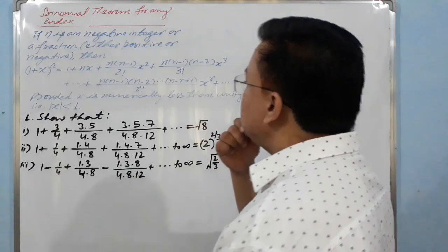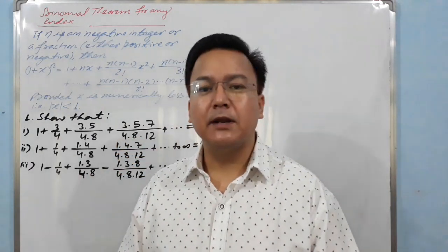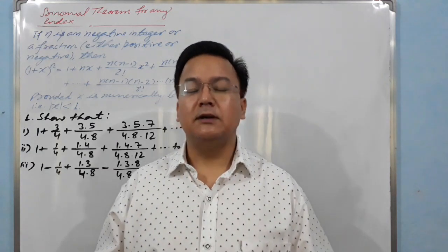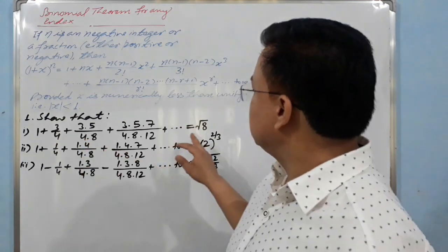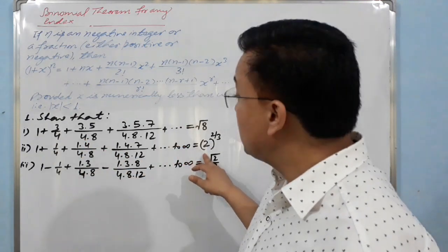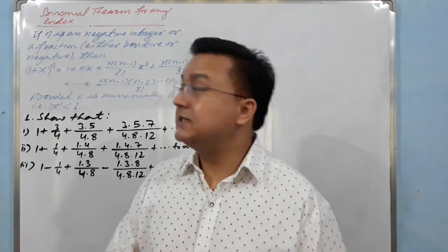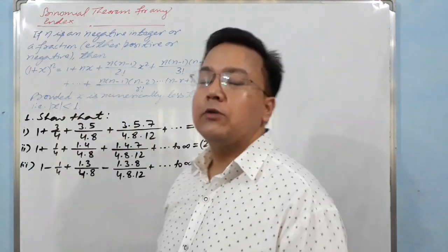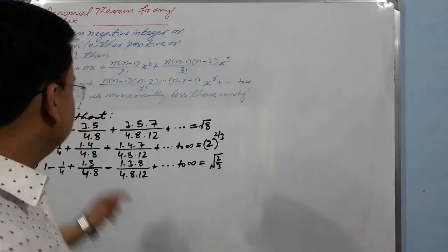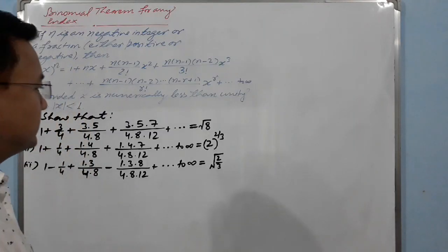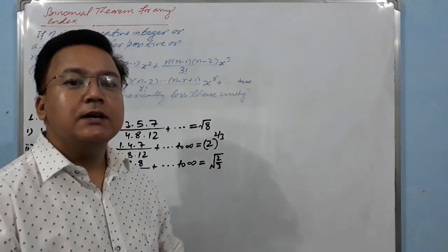Now let's try to prove. I have taken very important questions from the Grade 12 book — how to prove this equals the square root, this equals 2^(2/3), and this equals √(2/3) — using the Binomial Theorem for any index, also called the binomial series.